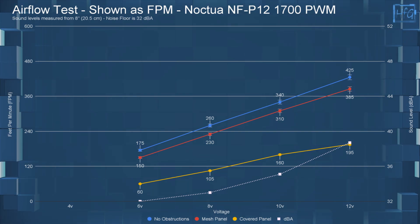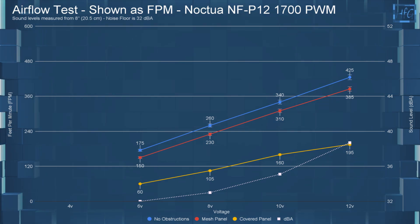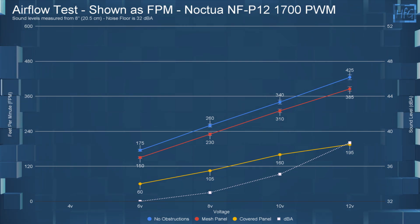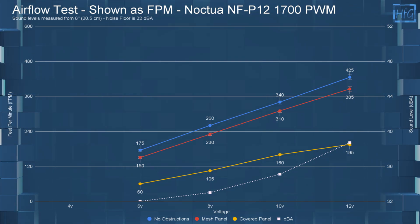Jumping up to 12 volts, with no obstructions, the FPM was 425. With the mesh panel, it had an FPM of 385. And with the covered panel, it had an FPM of 195.